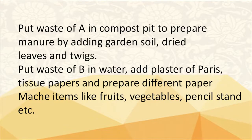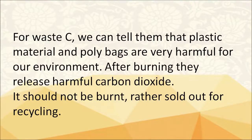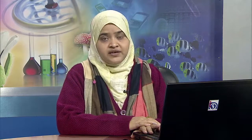Waste from bin A should be put in a compost pit to prepare manure by adding garden soil, dried leaves and twigs. Waste from bin B — papers — can be put in water with plaster of Paris and tissue papers to prepare paper mache items like fruits, vegetables and pencil stands. For waste C, children should be told that plastic materials and polybags are harmful for the environment; after burning they release harmful carbon dioxide, so they should be sold for recycling instead. The hand washing area should be cleaned regularly with cleansers, and wash basins should be adequate for school strength. In rural areas, water buckets, soap and mugs must be kept.